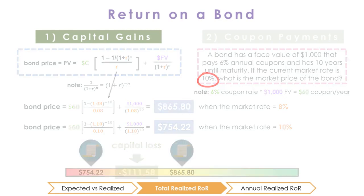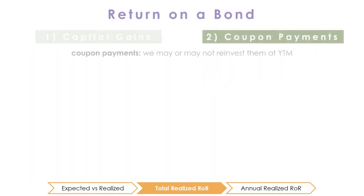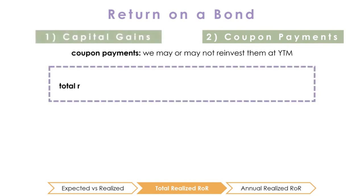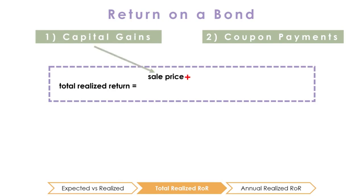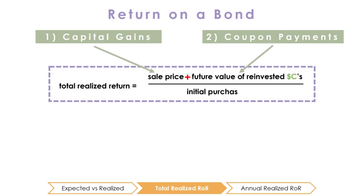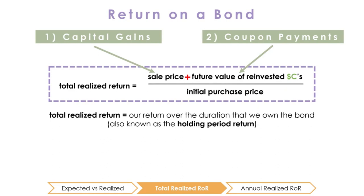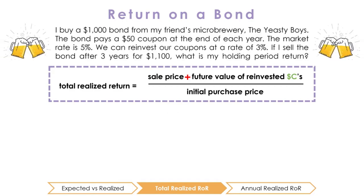We also earn a return on our bond through the coupon payments we receive. When we receive a coupon payment, we can choose whether to reinvest it and continue to earn a return on this money. The value of these reinvested coupon payments at the time that we sell the bond is part of our total realized return. Thus, the total return we earn over the period we own the bond is the amount we earn from the sale of the bond, plus the value at the time of sale of the reinvested coupon payments, divided by the price we initially paid. We call this our holding period return.